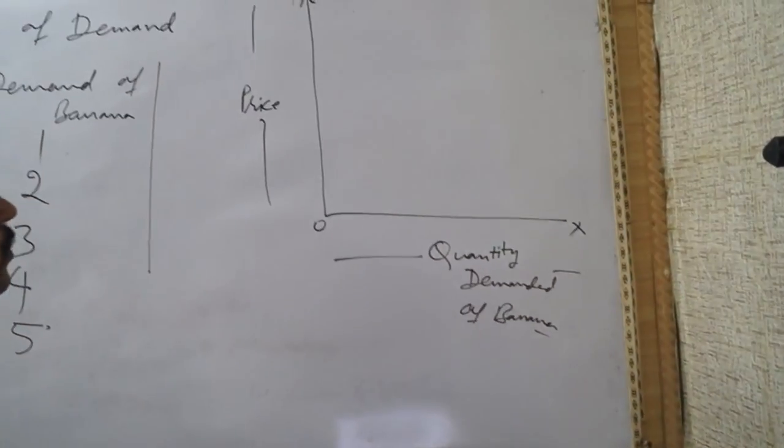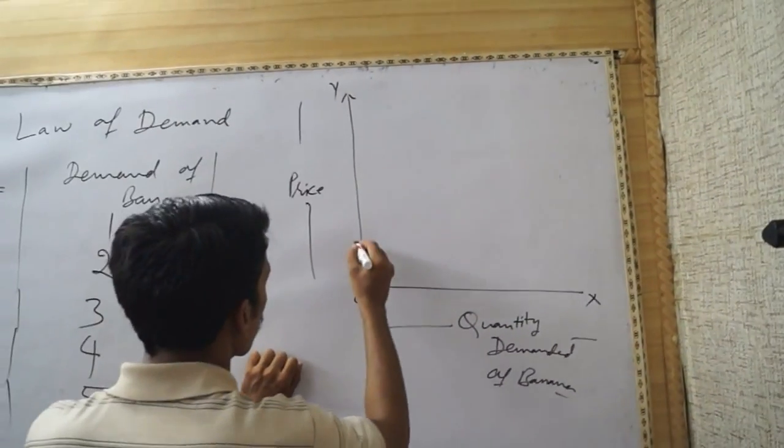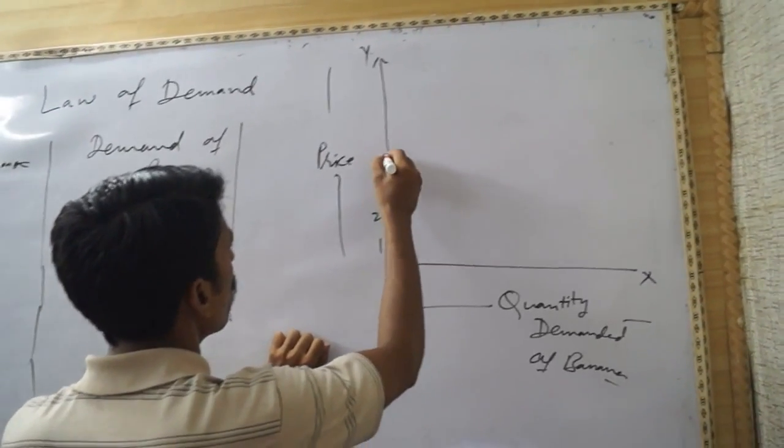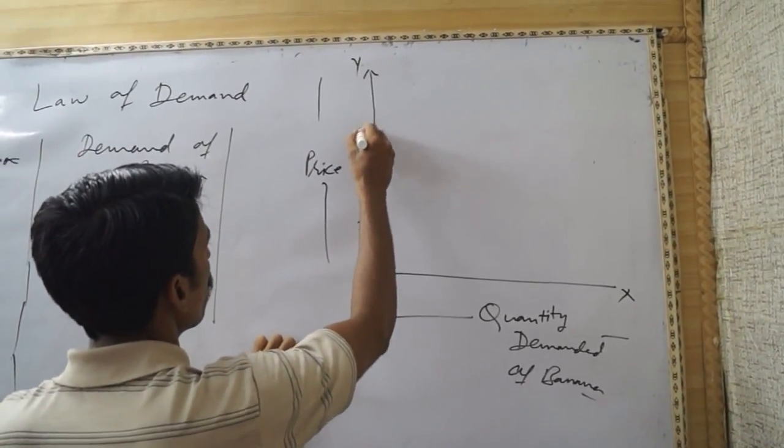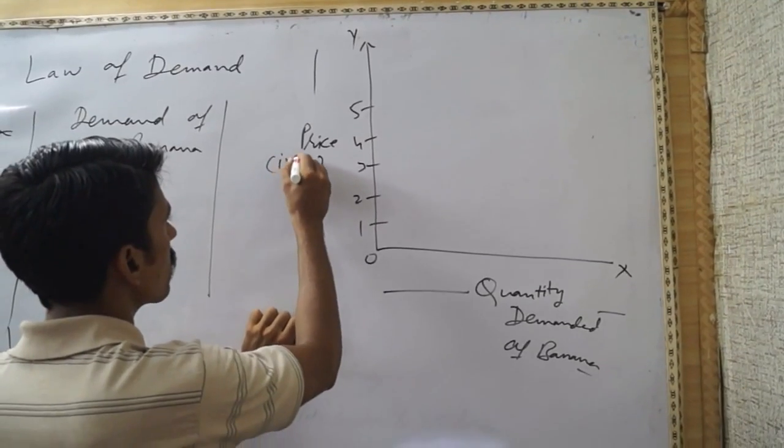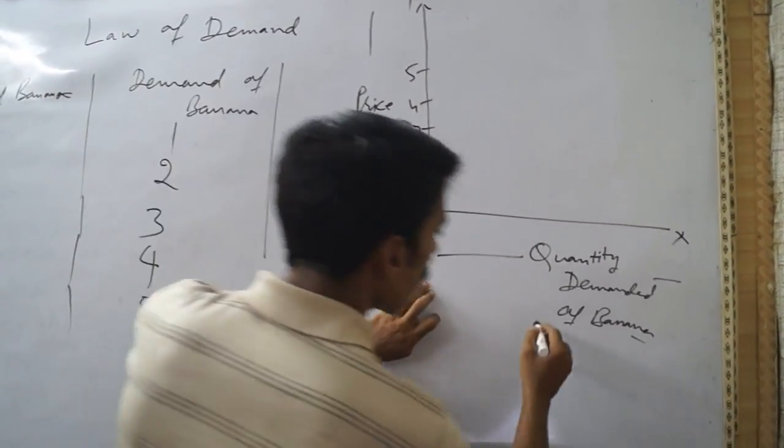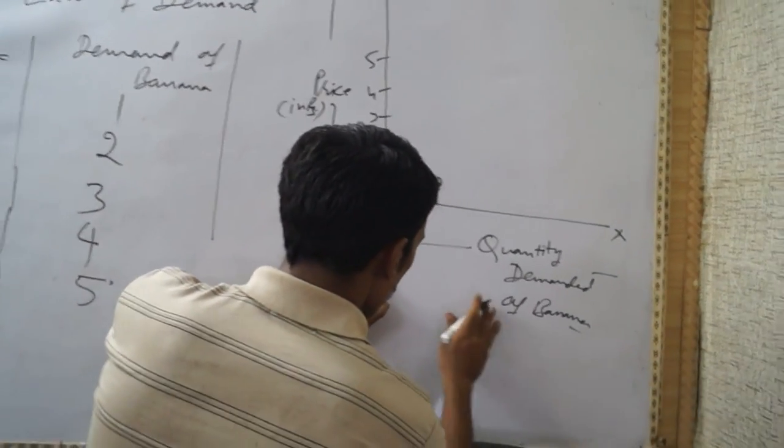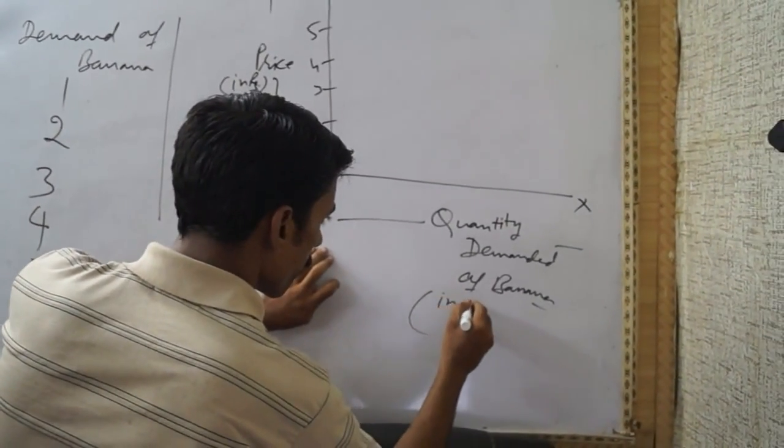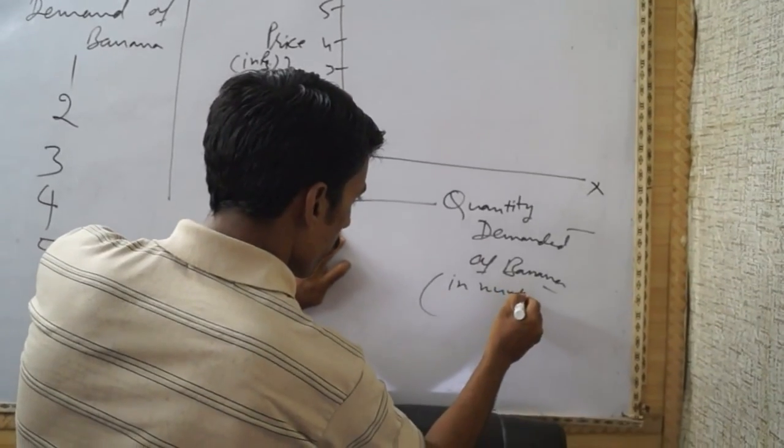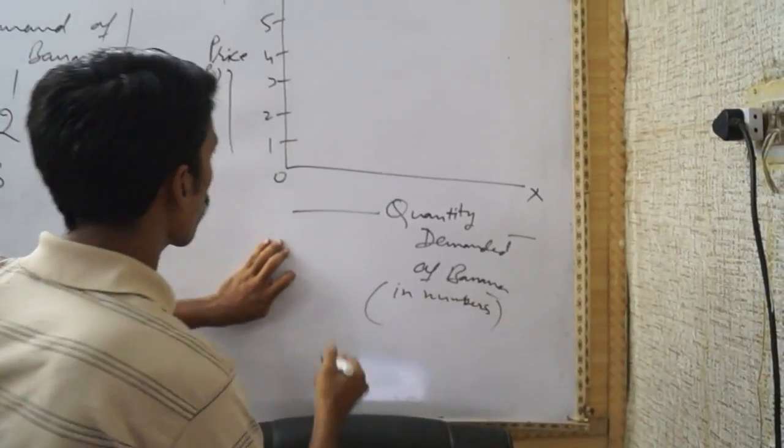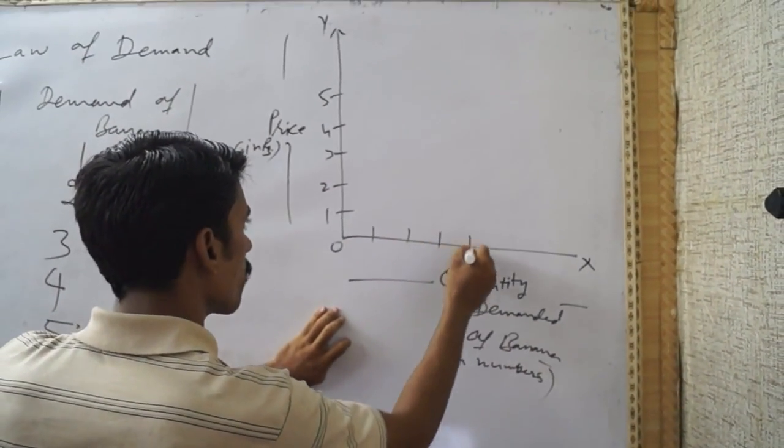One, two, three, four, five. It may be in rupees, price or in your currency, in numbers. One, two, three, four, five.